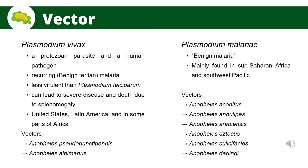Plasmodium vivax is a protozoan parasite and human pathogen. Recurring or benign tertian malaria is caused by this parasite, which is the most common and widely spread. Although Plasmodium vivax malaria is less virulent than Plasmodium falciparum, it can cause severe disease and death due to splenomegaly, or a pathologically enlarged spleen. It is found mainly in the United States, Latin America, and some parts of Africa. Its known vectors are Anopheles pseudopunctipennis and Anopheles albimanus.